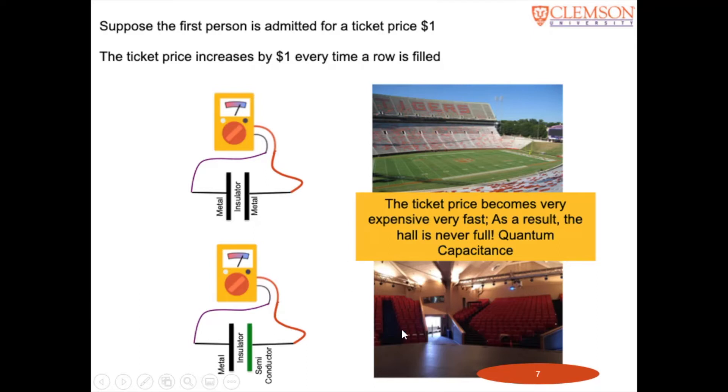But if you look at Tillman Auditorium instead of Death Valley, then you obviously have less number of seats in a row. And so the ticket price goes up very fast. For example, if there are only ten seats in the first row, so when ten people come in, the first row gets filled. So when the eleventh person comes in, she may have to pay two dollars to sit in the second row. So the ticket price increases much faster in the case of Auditorium than in the case of Death Valley because there are more number of seats per row. And that's the difference between a metal and a semiconductor.